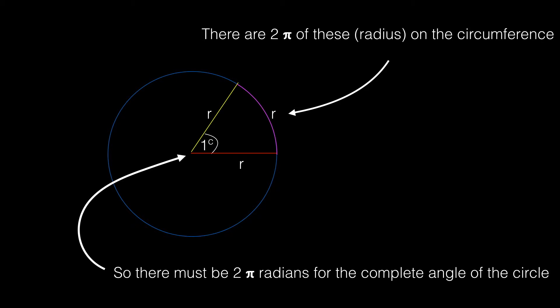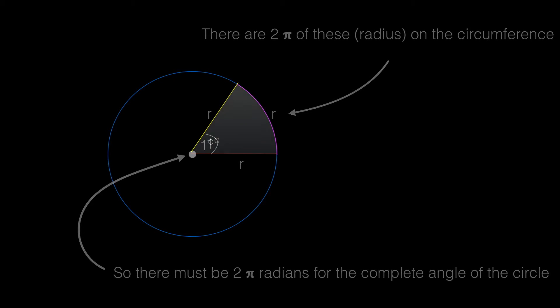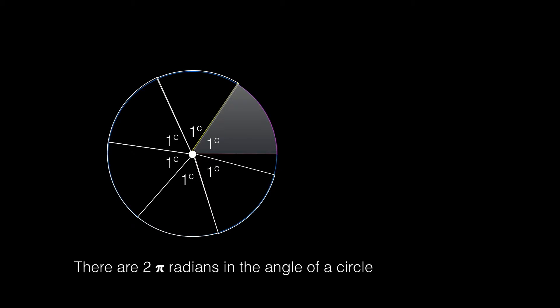This probably doesn't add anything, but let's just look at that visually. There's one radian, a second radian, the third, fourth, fifth, and sixth one, and it leaves about 0.28 of a radian unfilled. So to go all the way around would be about 6.28 or 2 pi radians around the circle.